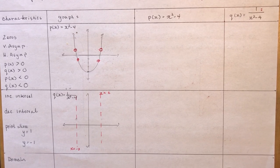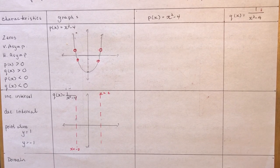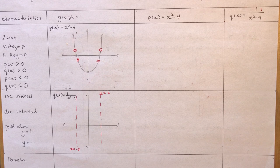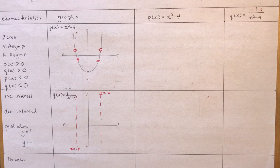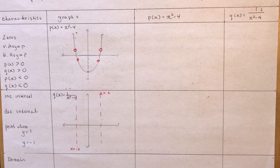This is part two of 5.1. I'm going to go through an example, and we will be doing a lot more with the next three lessons until you've got this nailed for all sorts of different types of rational functions.